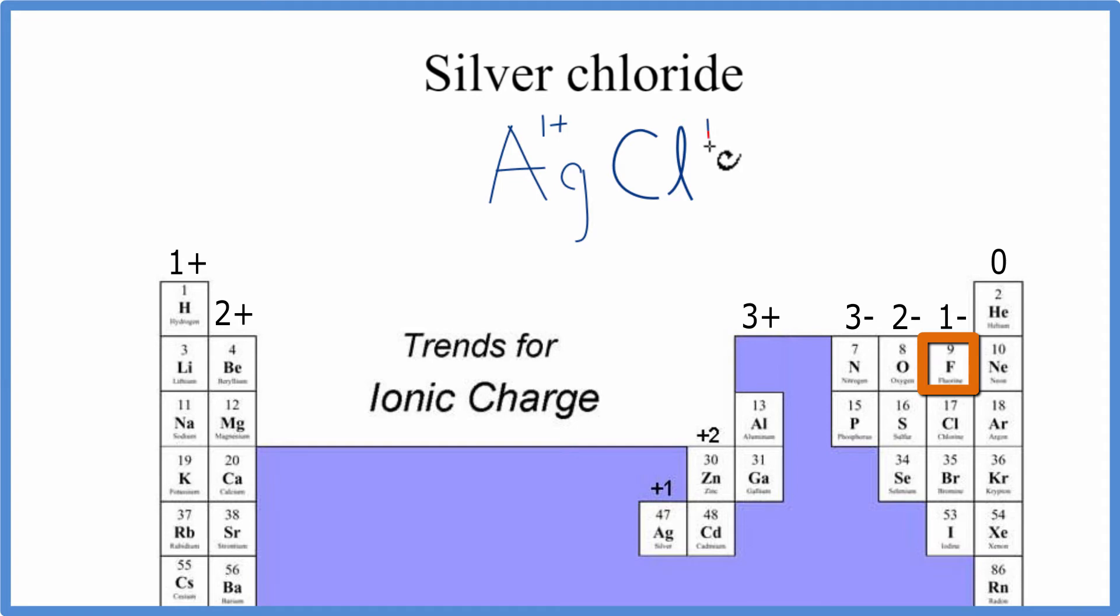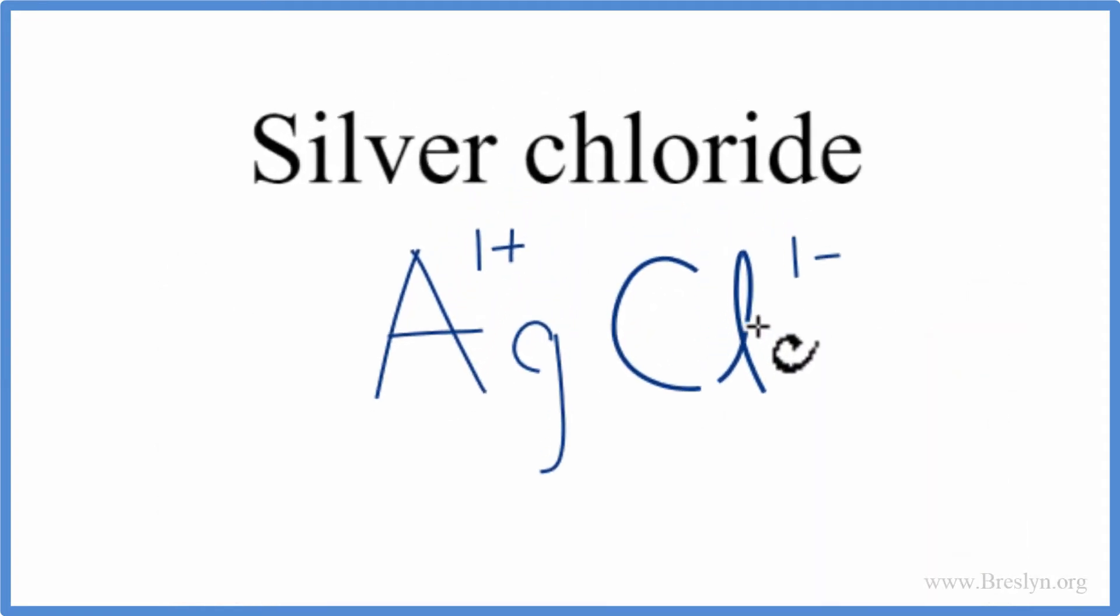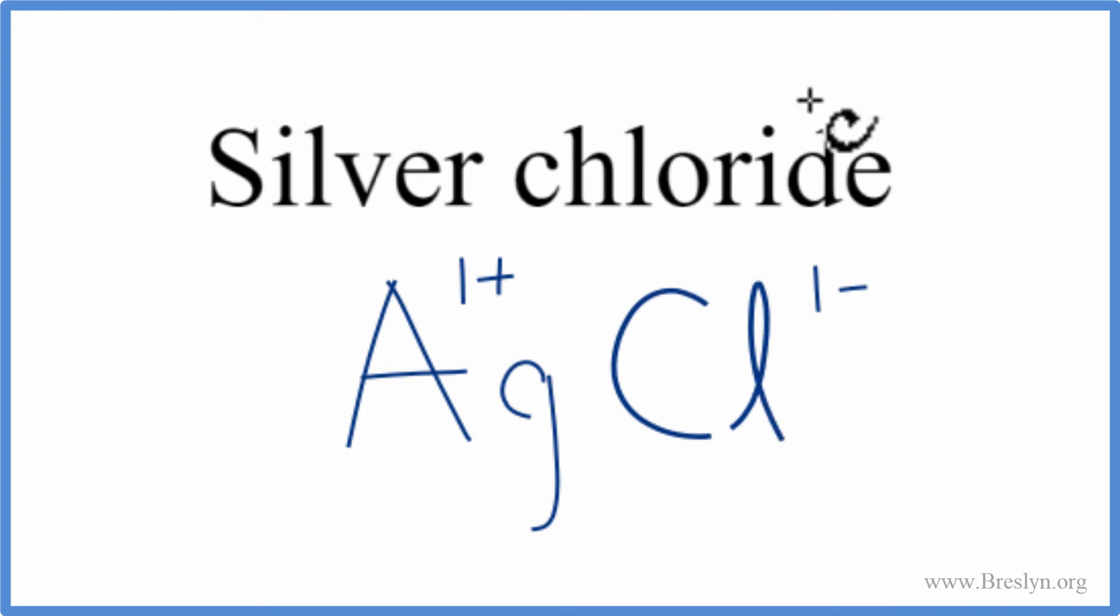Chlorine has a charge of 1-, so these charges need to add up to 0 to give us a net charge of 0 for this to be a neutral compound, and silver chloride, that's a neutral compound.